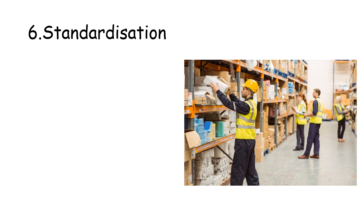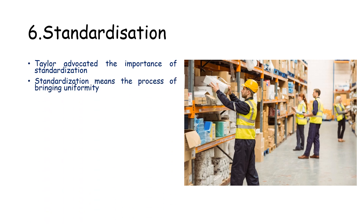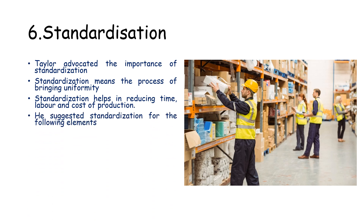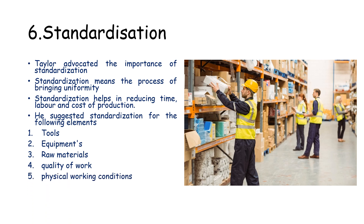The next important technique is standardization. Taylor advocated the importance of standardization, which means the process of bringing uniformity — setting standards or benchmarks. Standardization helps in reducing time, labor, and cost of production. Taylor suggested standardization for the following elements: tools, equipment, raw materials, quality of work, physical working conditions, and techniques of production.